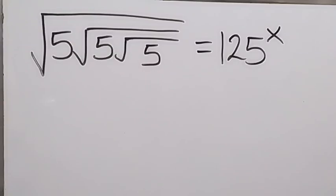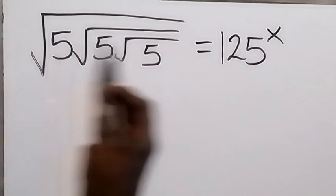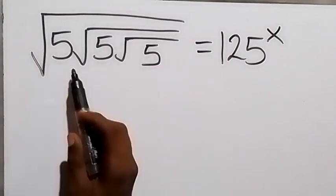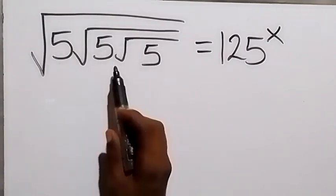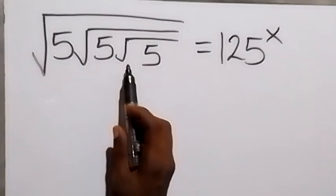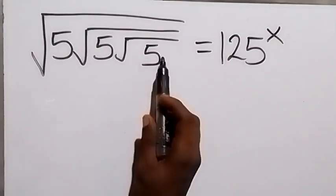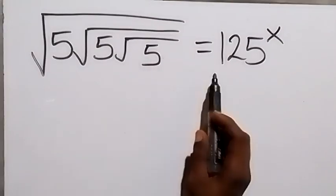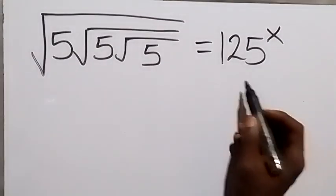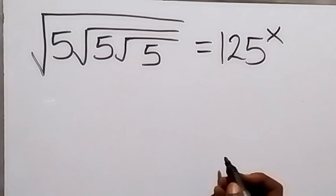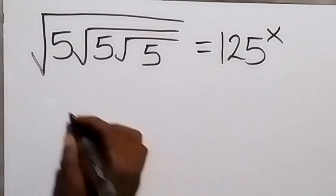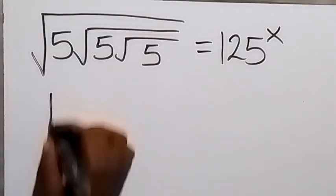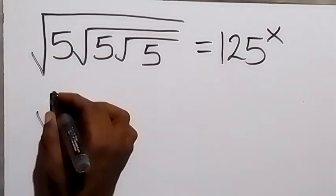Hello, you are welcome. How to solve this problem: square root of 5 times root 5 times inside the root we have root 5 again, equals to 125 raised to power x. From here we can square both sides.